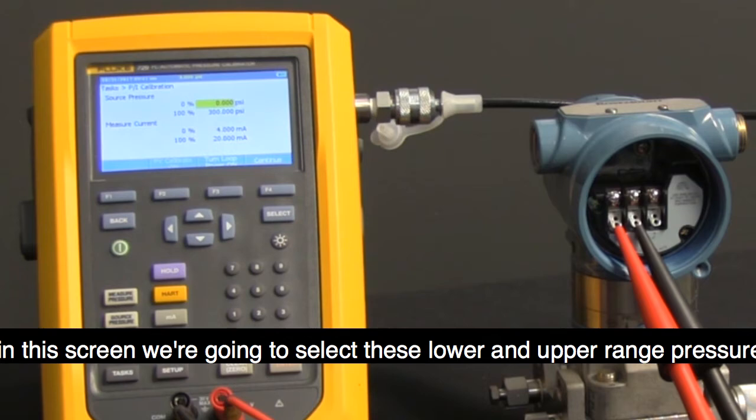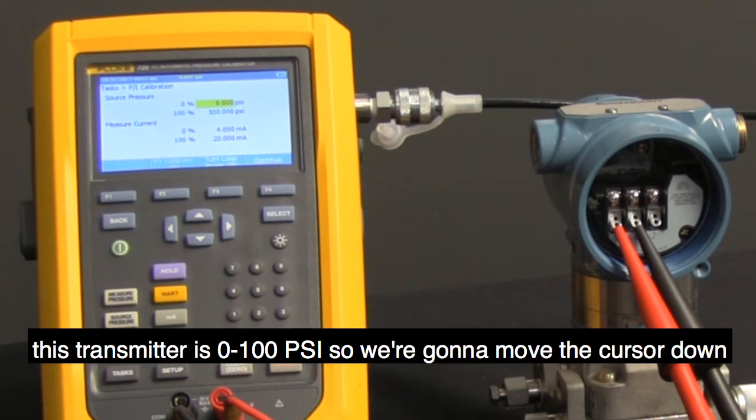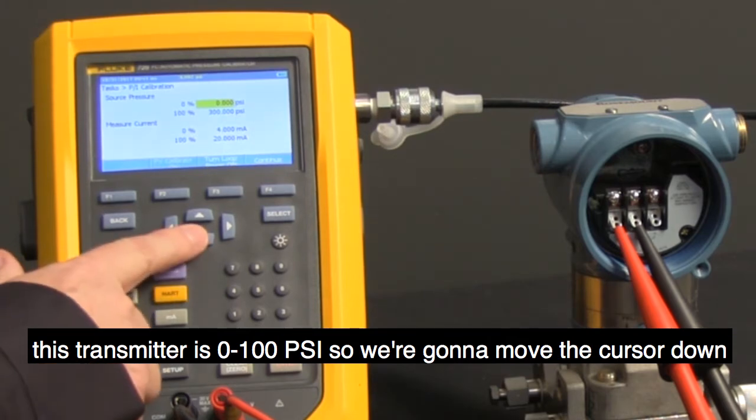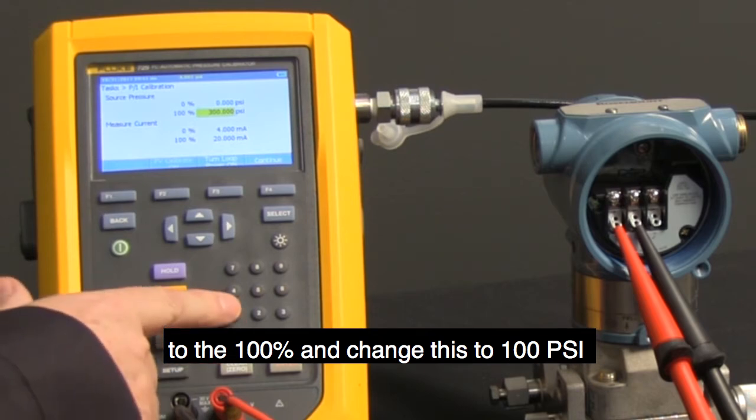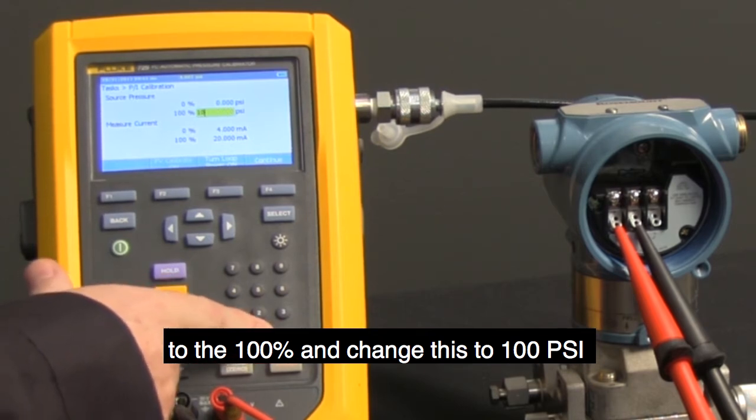In this screen, we're going to select the lower and upper range pressure. This transmitter is 0 to 100 PSI, so we're going to move the cursor down to the 100% and change this to 100 PSI.